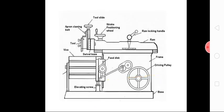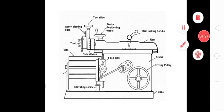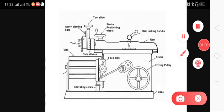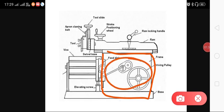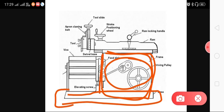This is the figure of the shaper machine. On the right side we can see the column. In this column, the driving mechanism and driving pulley lever are all connected. This column is situated on the base. The base is made up of cast iron because cast iron has vibration absorption capacity — it can absorb vibration very effectively.